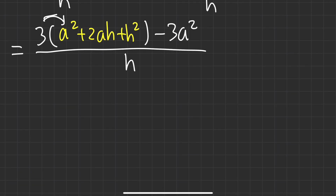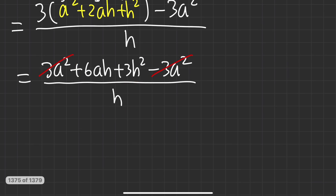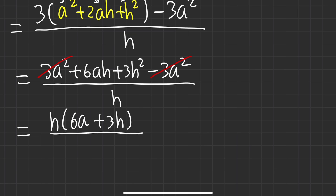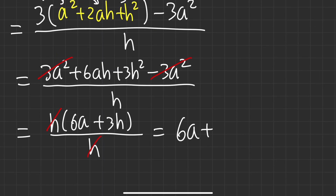Distributing the 3 gives 3a squared plus 6ah plus 3h squared minus 3a squared, all over h. The 3a squared and minus 3a squared cancel. Both remaining terms on top have h, so we factor out h to get h times 6a plus 3h, all divided by h. Canceling h gives a final answer of 6a plus 3h.